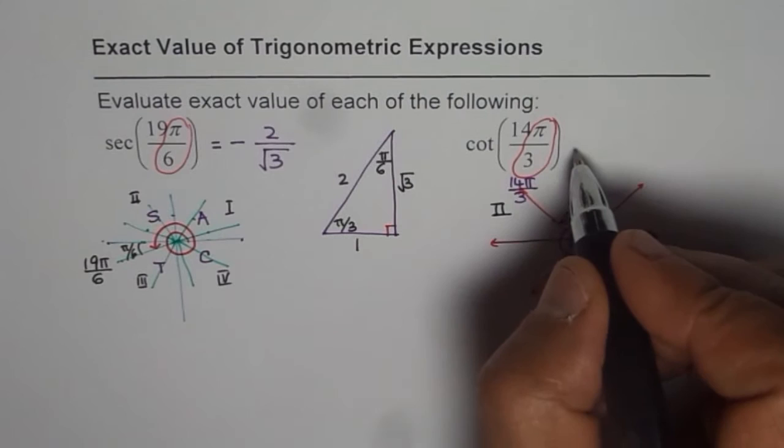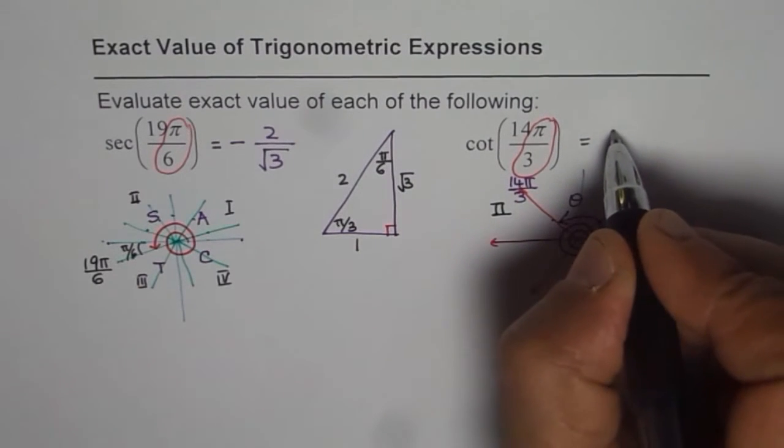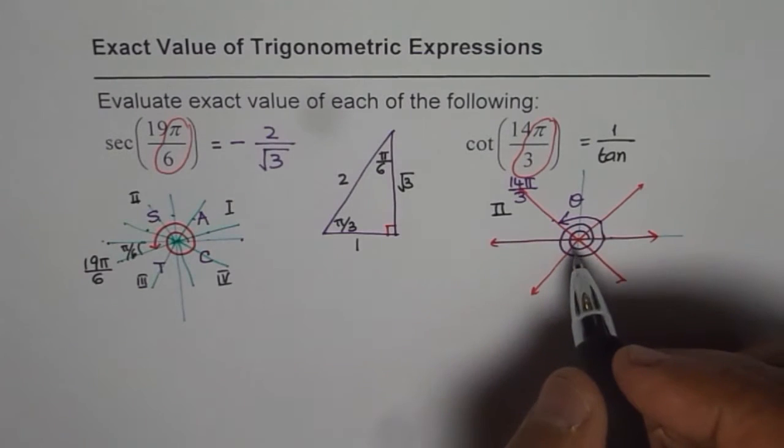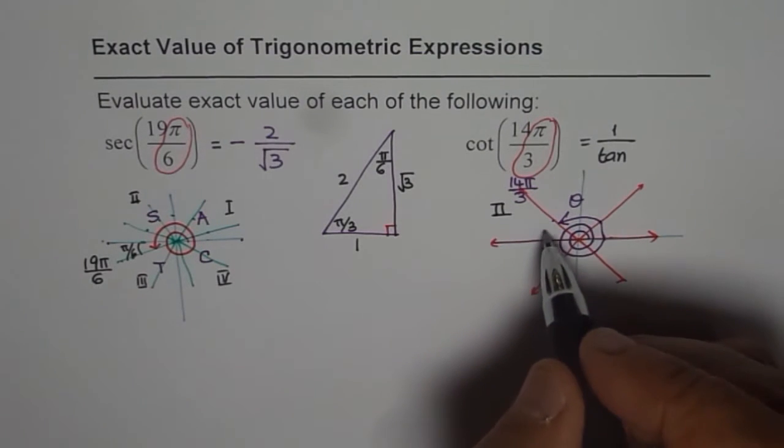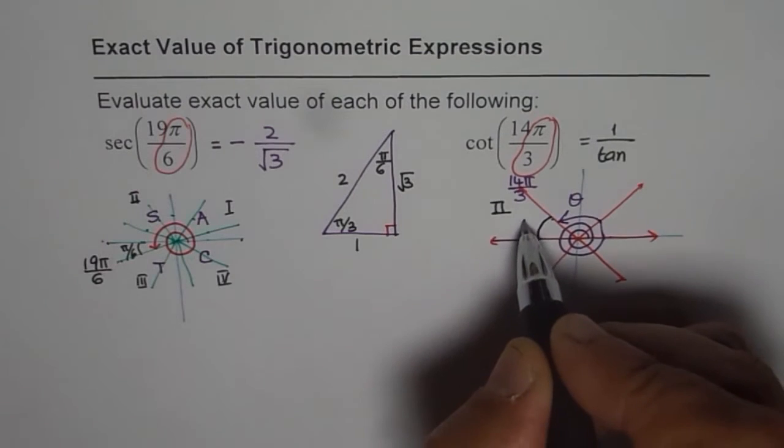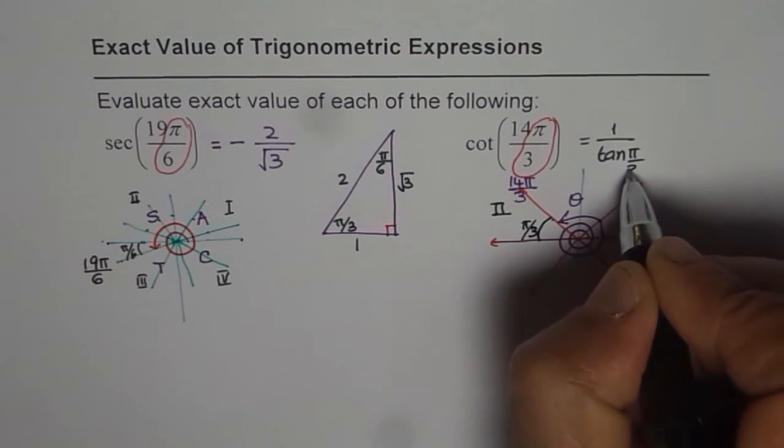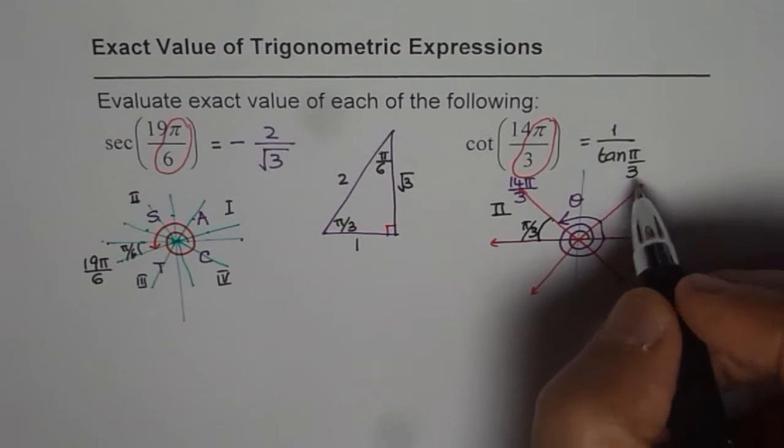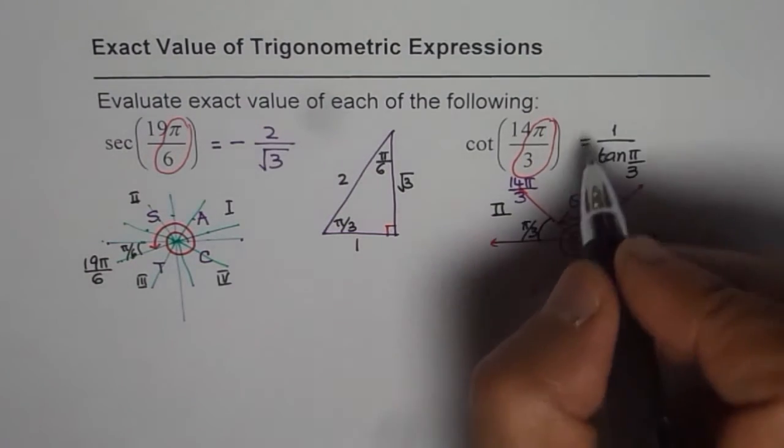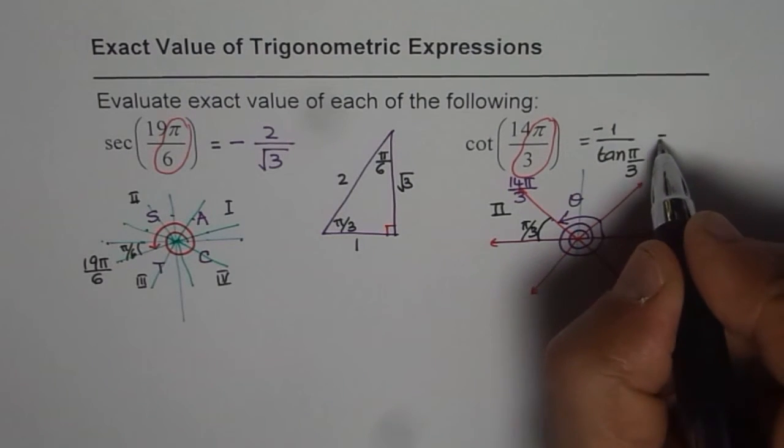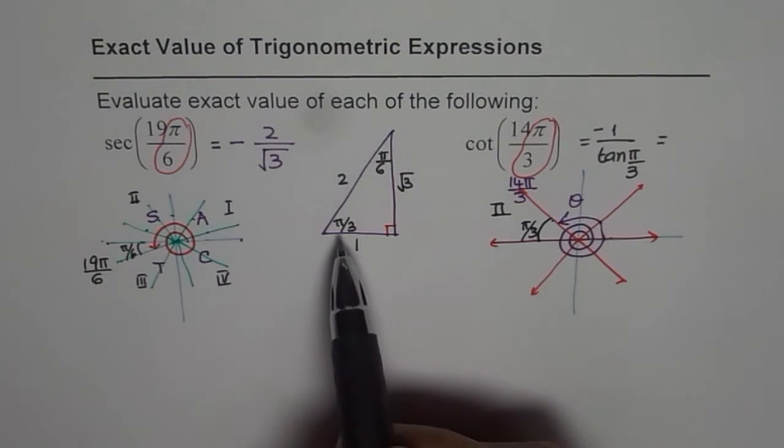Cotangent is reciprocal of tan. So we are looking for 1 over tan. And the acute angle here is this reference angle. You can see it is π by 3. So it is tan π by 3. But we are in quadrant 2. So it is a negative value. And therefore, we can write down now the value.